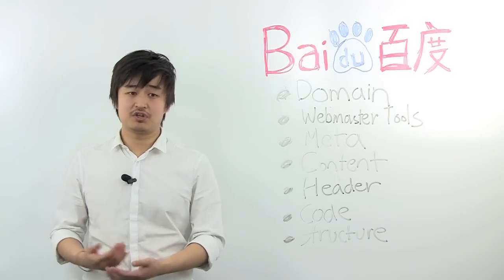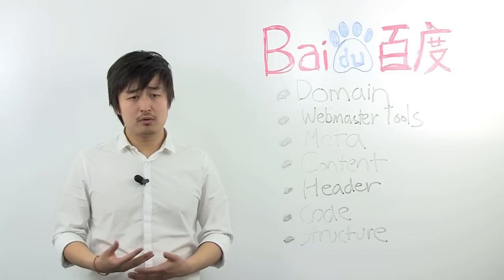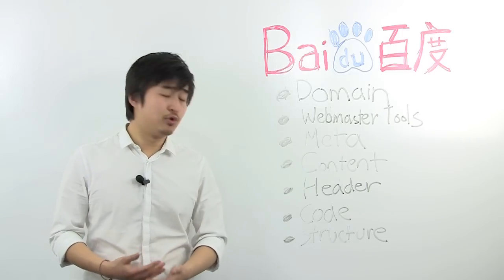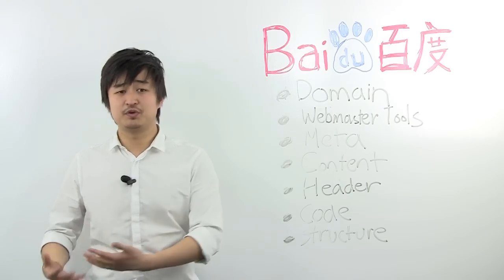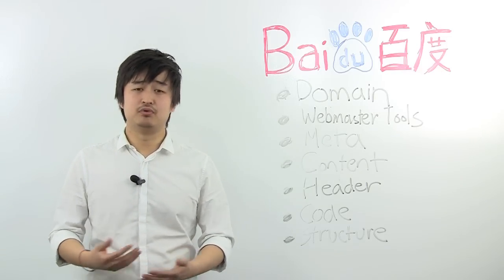Lastly, it's the website structure. Baidu's crawlers will not crawl as many or as deep as Google's crawlers. It's not as advanced. So make sure the important pages you want to rank are on the top level. Make sure your menu is not going down too deep to maybe beyond third level. Keep it simple. It's really important.